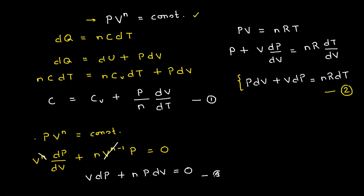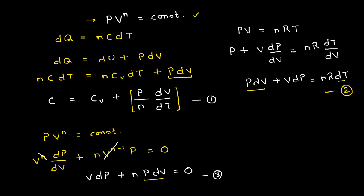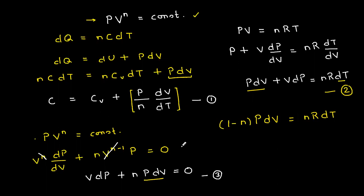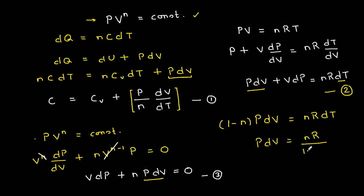Using equations two and three, I can find p·dV in terms of dT, which I'll substitute into the expression for C. If I subtract equation three from equation two, the V·dp terms cancel, and I get (1 − n)·p·dV = nR·dT. Therefore, p·dV equals nR divided by (1 − n) times dT.